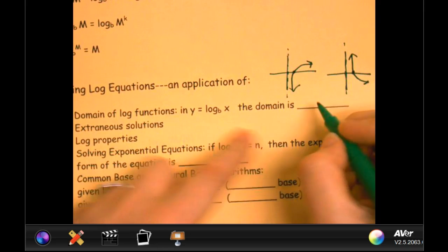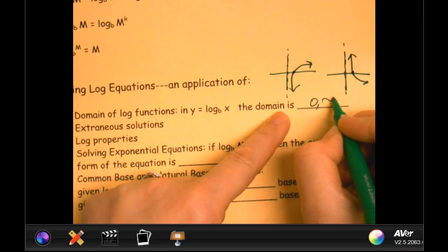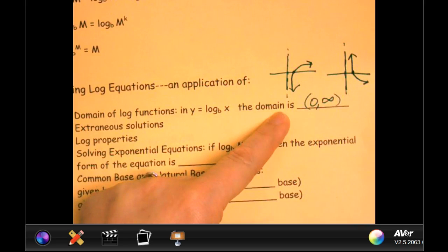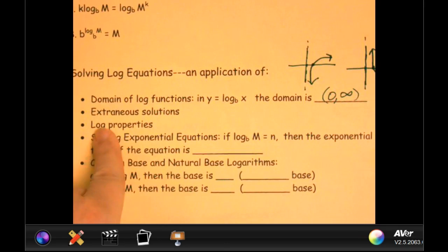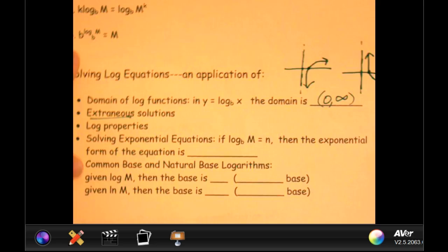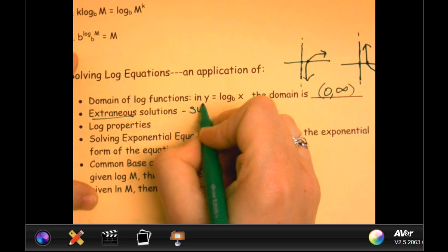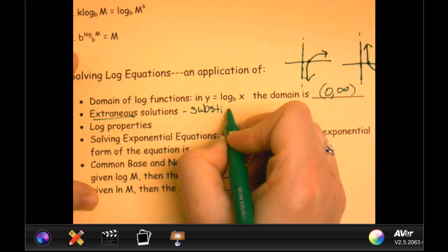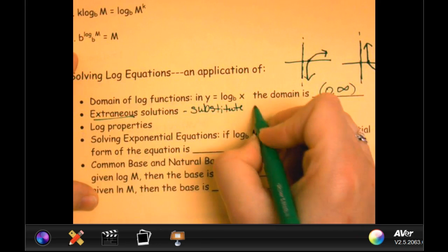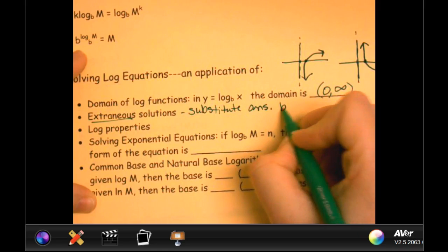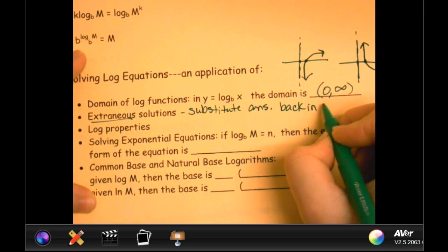0 to infinity. And that's important to understand because when we solve them, the answers we get don't necessarily always work, right? And the ones that don't work are called what? Extraneous, right here, extraneous solutions. So that means that you have to substitute answer back in and check.